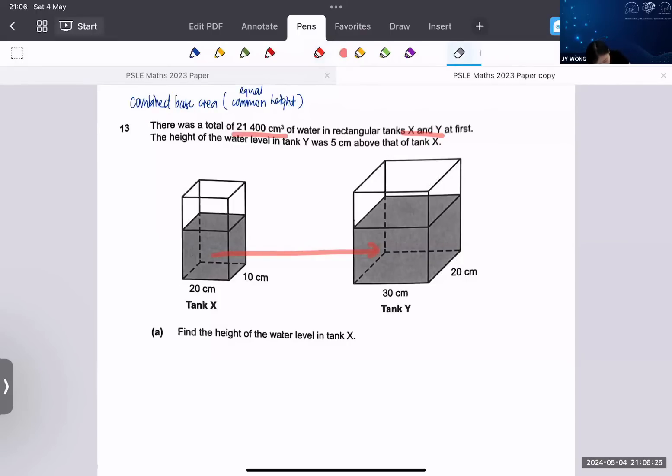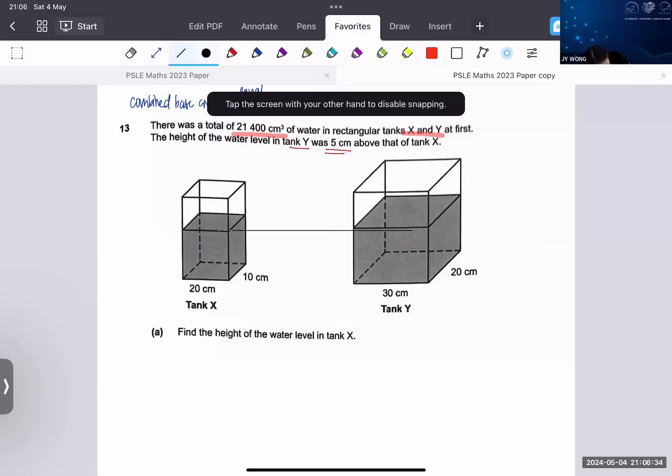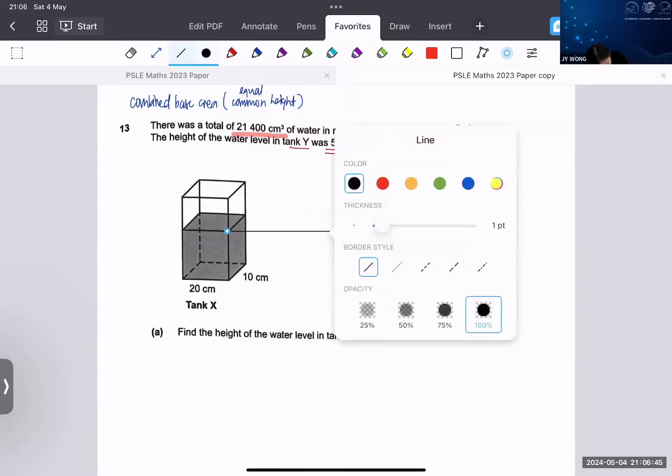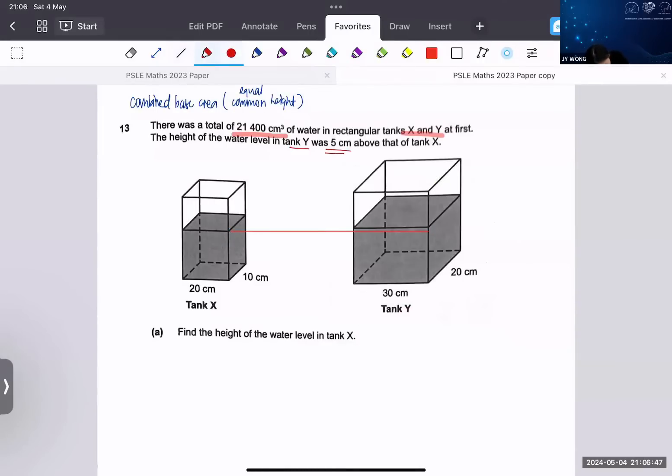Next they tell you the height of water level in Y was 5 cm more. So if you were to see this, 5 cm more, this is the meaning of 5 cm more. I'm gonna shade it, so this part in red is the extra height.